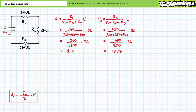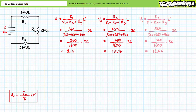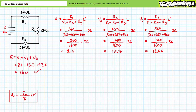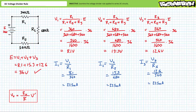Similarly, V2 equals R2 divided by (R1 plus R2 plus R3) times source voltage E — substituting our given values yields V2 to be 15.3 volts. Finally, V3 equals R3 divided by (R1 plus R2 plus R3) times source voltage E — substituting our given values yields V3 to be the remaining 12.6 volts. The individual voltage drops sum to the 36-volt rise induced by the source. An application of Ohm's law for any of the voltage values solving for current yields 22.5 milliamps, confirming that current through elements in series is the same.